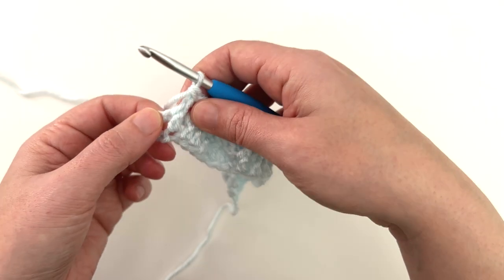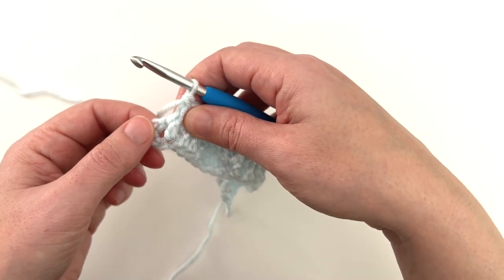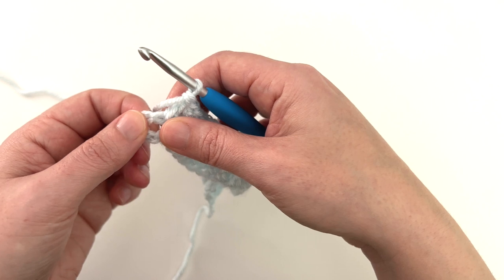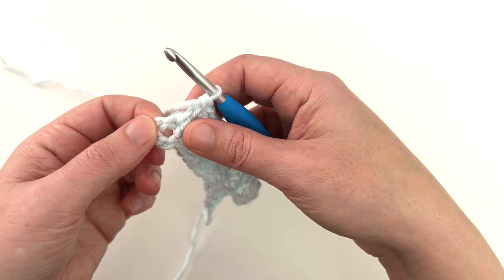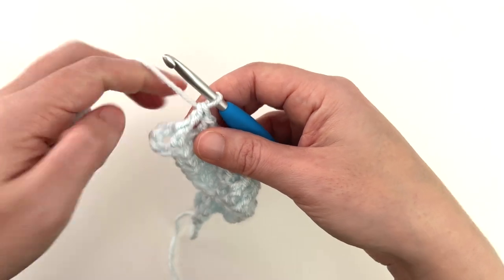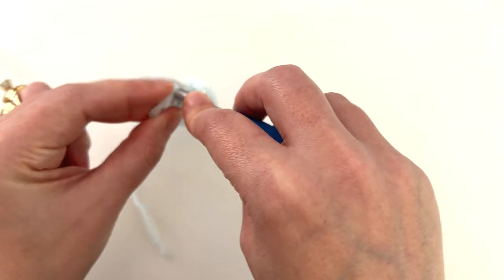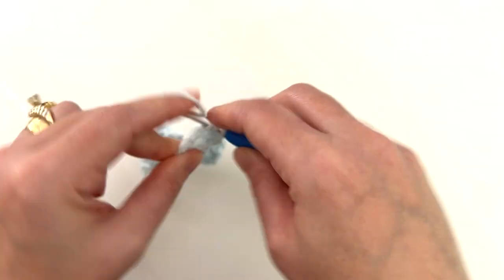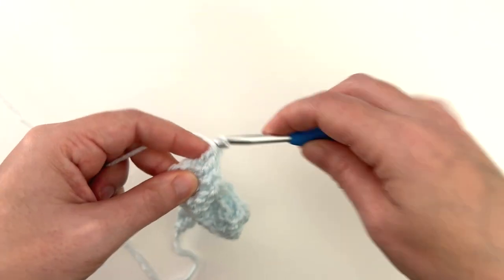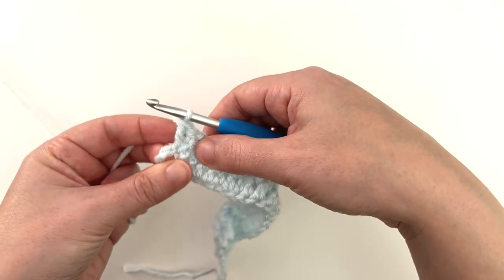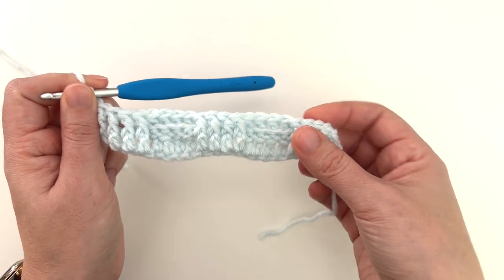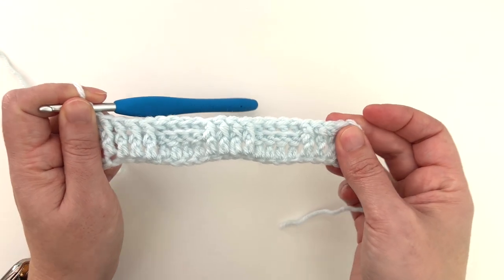I've just done my last front post double crochet and now we're going to double crochet into the top of our turning chain. Really important not to forget that stitch because we don't want Willy Wonka edges. So that is row two.